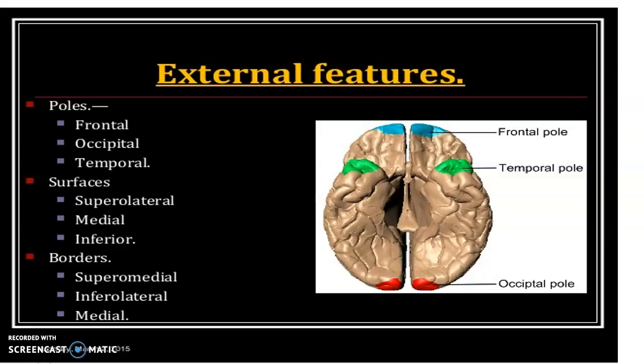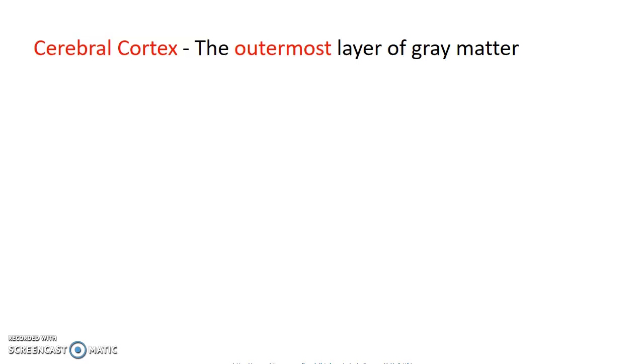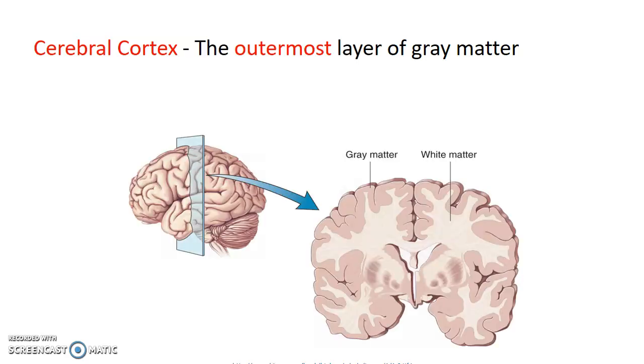The cerebrum has poles: we have a frontal pole in blue, the green pole is a temporal pole, and posteriorly we have the occipital pole. The hemispheres have surfaces: a superior lateral surface, the medial surface, and the inferior surface of the brain. It has a superior medial border, inferior lateral border, and a medial border. The cerebral cortex is the outermost layer of the gray matter; the cerebral hemisphere has outer gray matter and inner white matter, so it is the gray matter that forms the cerebral cortex.